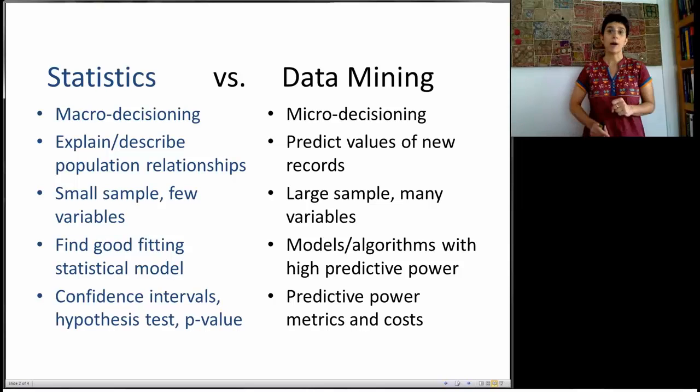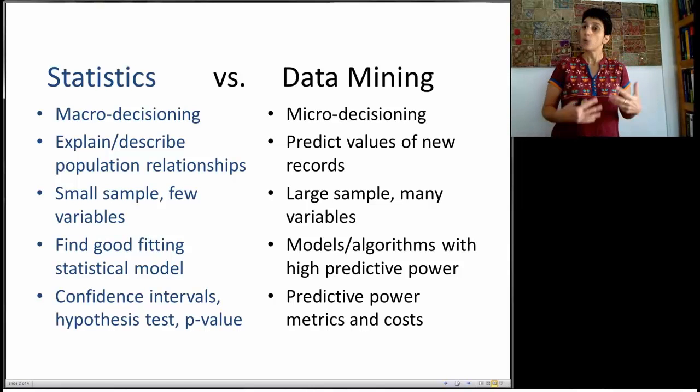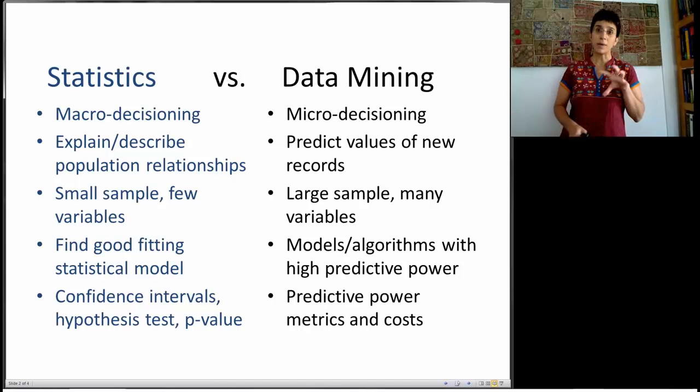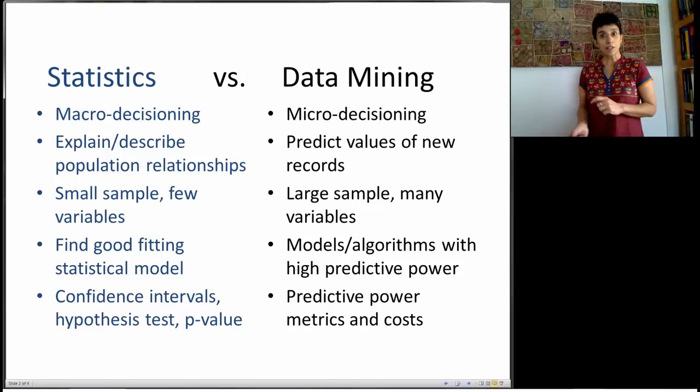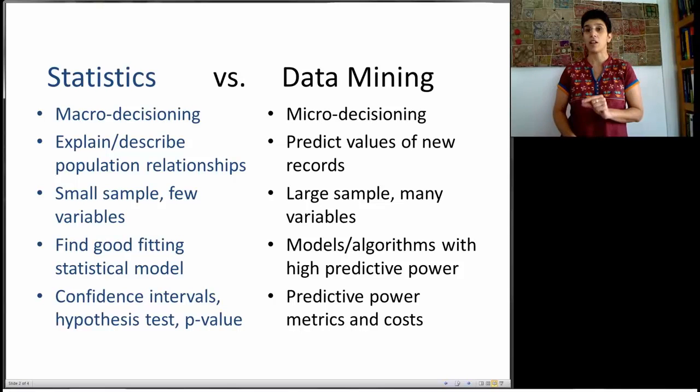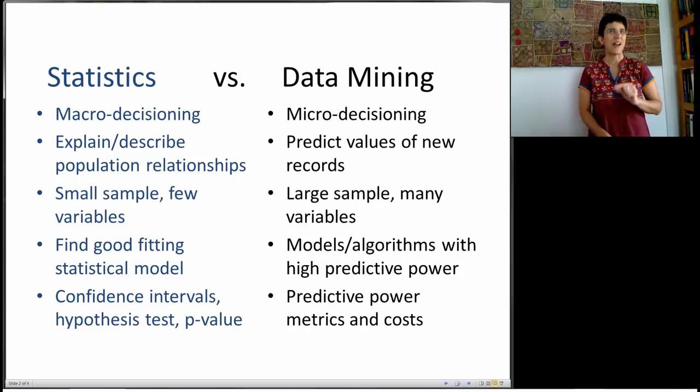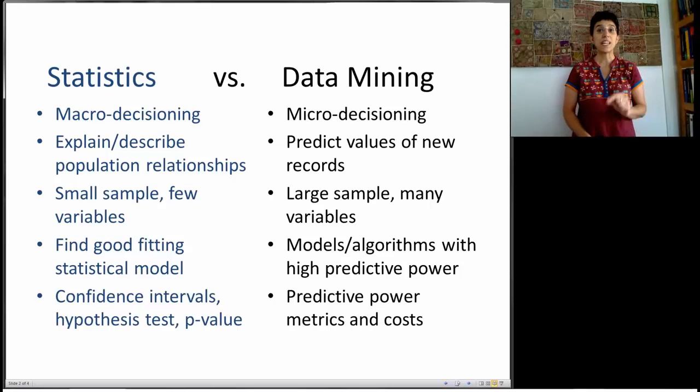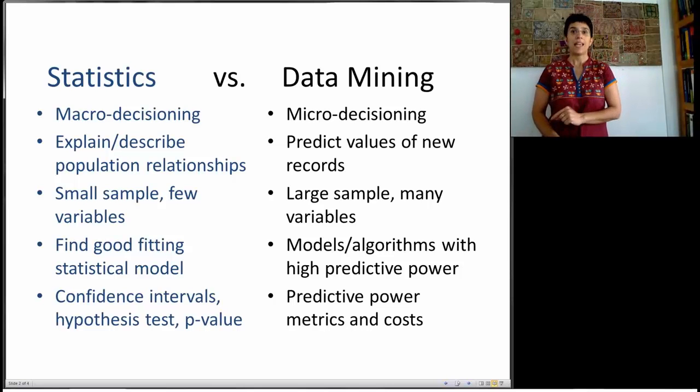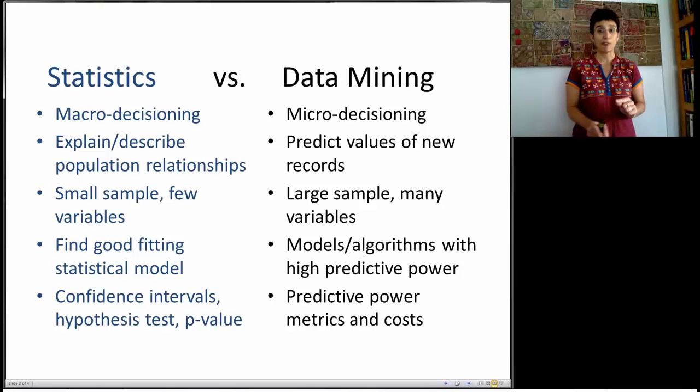How do we define a good model? In statistics, a good model is one that fits the data reasonably well. We want an approximation, a statistical model that's an approximation of the data. In contrast, in data mining, we don't try to find the model that fits the data best. We try to find the model, or method, or algorithm that best predicts new data. And that, sometimes, is different from finding a model that fits the data well.